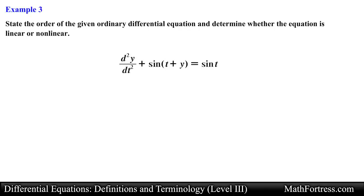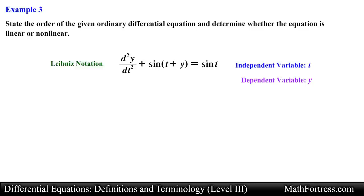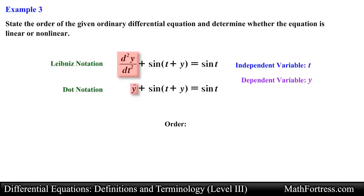Let's try the third example: the second derivative of y with respect to t plus sine of (t plus y) equals sine of t. This ODE is written using Leibniz notation, so we can explicitly see that the dependent variable is y and the independent variable is t. Since time is the independent variable, we can rewrite this ODE using Newton's dot notation. This ODE has only one derivative — a second derivative — so we classify it as second order.